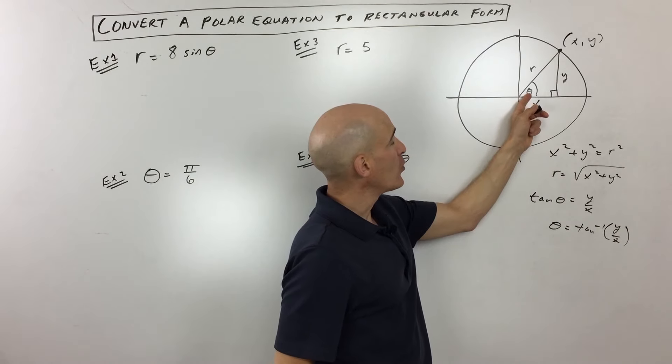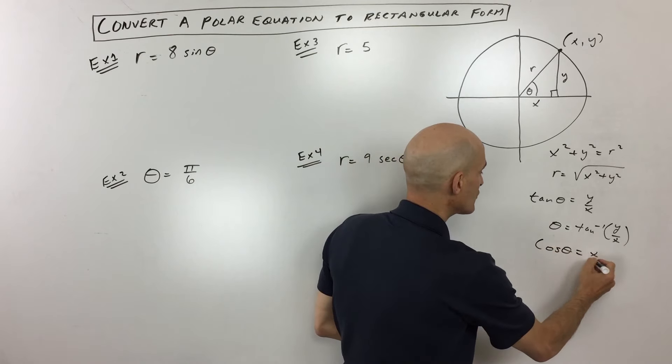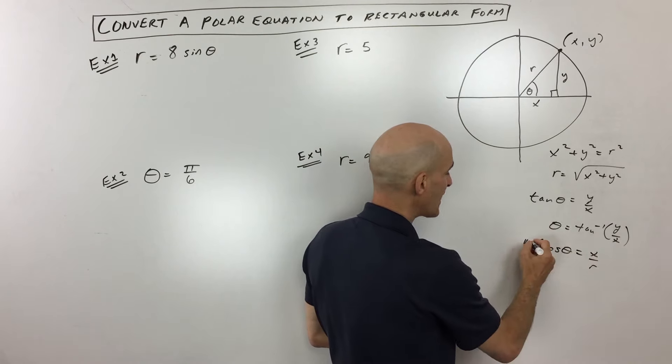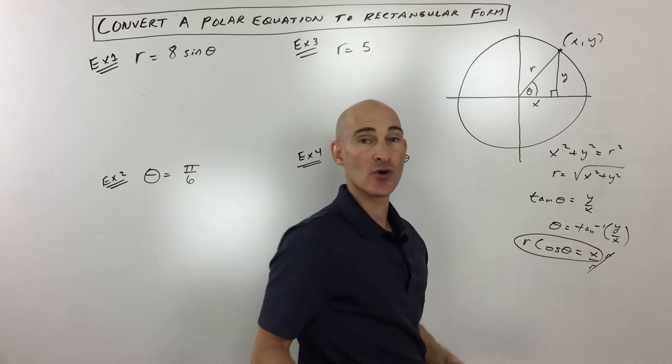Furthermore, cosine of theta equals adjacent over hypotenuse, so let's write that down. Cosine of theta equals x over r. And if you multiply both sides by r, you can see that x is equal to r times the cosine of theta.